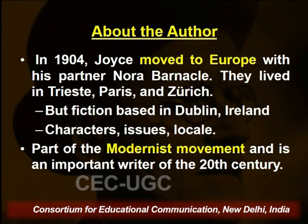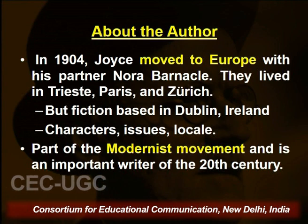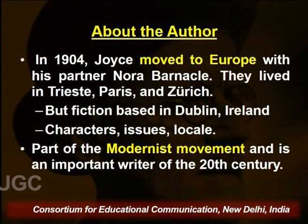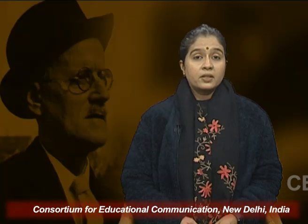In 1904, the fourth year of the 20th century, Joyce moved to Europe with his partner Nora Barnacle. While he spent a lot of time in Europe, his fiction is almost always based in Dublin, Ireland. The characters are Irish, the issues he engages with belong importantly to Ireland, and even the setting or locale is Ireland. So even as physically he spent time in different parts of Europe, his works continue to engage with reality in Ireland.